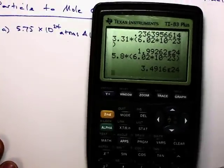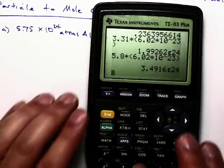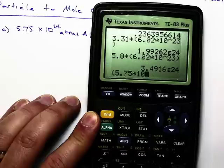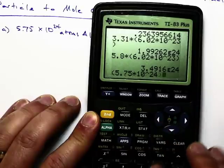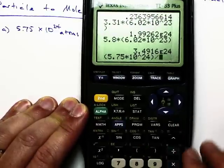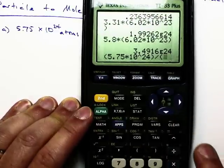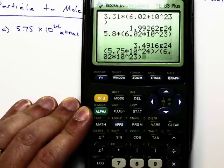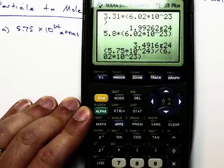So if I go ahead and do this, remember, this is how I do it. Parentheses, 5.75 times 10 raised to the 24th. I'm going to close that parentheses. And then I'm going to go ahead and put the division sign. Start a new parentheses. 6.02 times 10 raised to the 23rd. Close it off again. Hit enter.